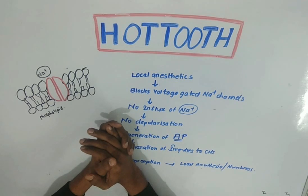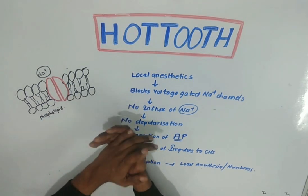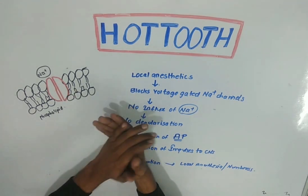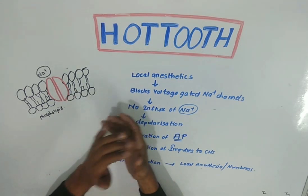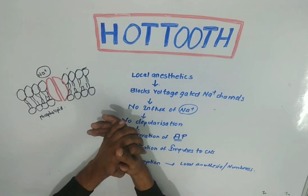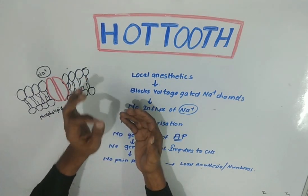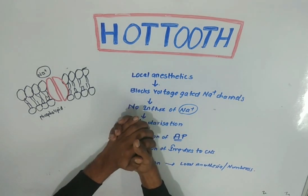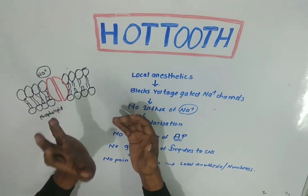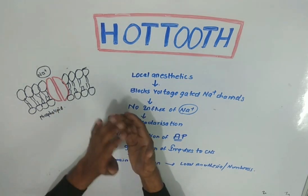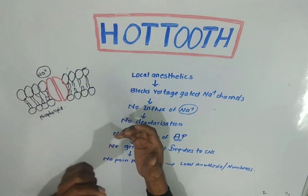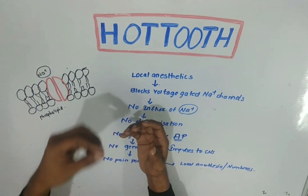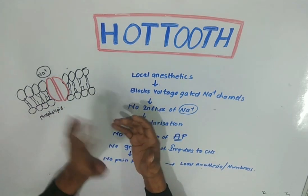Imagine a clinical situation where you are doing a root canal in a mandibular posterior teeth, especially a mandibular molar. While you are doing a root canal for a mandibular molar, when you give an inferior alveolar nerve block, the patient has profound anesthesia in the ipsilateral tongue, lips and soft tissues. Whereas, while you are trying to do an access cavity preparation on the tooth, the patient suddenly jumps from the dental chair with acute pain.